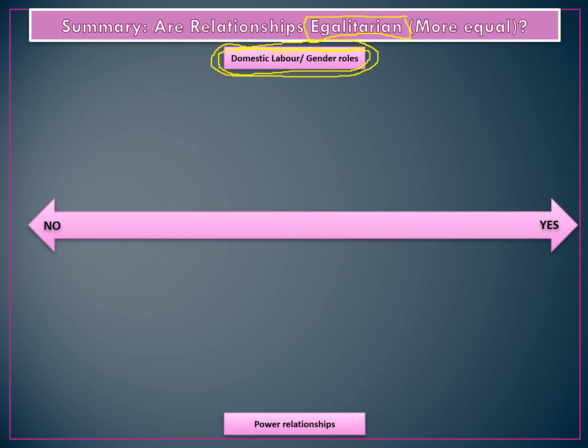Is it housework? Is it domestic labour? Is it chores? Who is doing it — men or women? On the other side of the story, we have the power relationships: who has control of the family, who makes decisions, who controls money and finances. These will be the two arguments we'll look at. Most of the thinkers we'll see have appeared in previous topics within the theory of the family, and in some cases their ideas haven't changed — we're just applying them to a different perspective. There are also a few wildcards that will pop up.